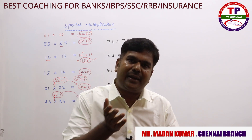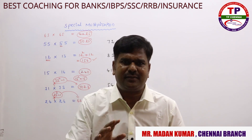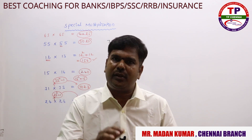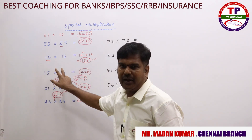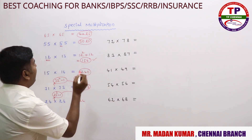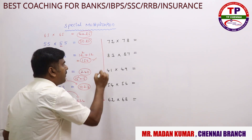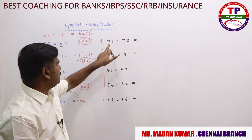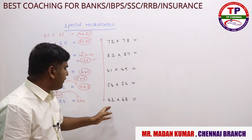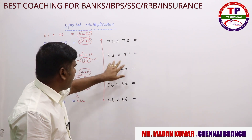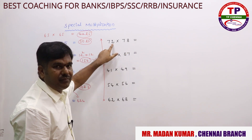We've discussed squares ending in 5, difference of 1, and difference of 2. Now let's look at a new set of problems. Can you spot any similarity in these pairs: 72×78, 83×87, 41×49, 54×56, 62×68? Look carefully at each pair — there is a pattern.